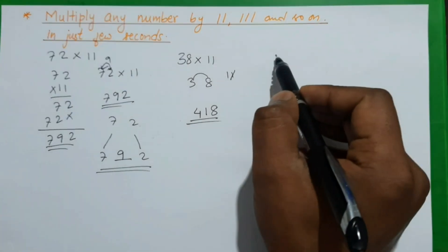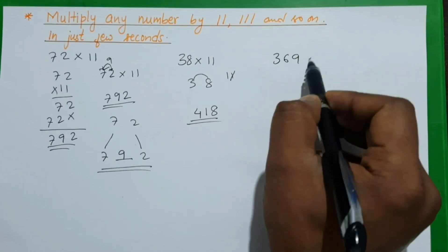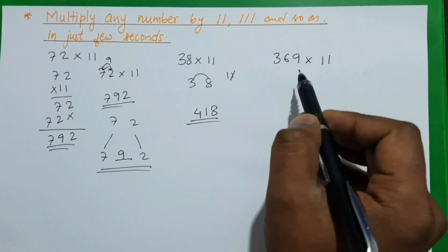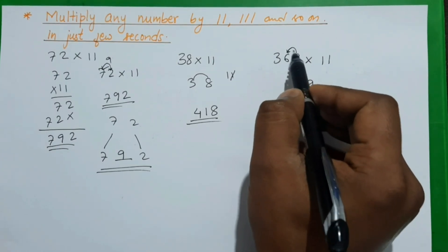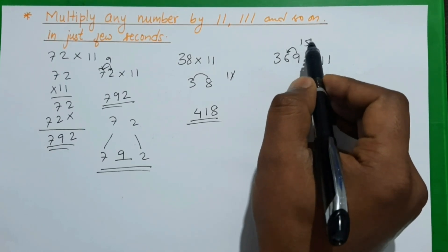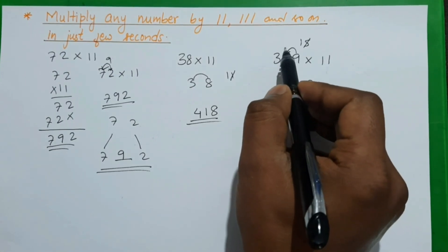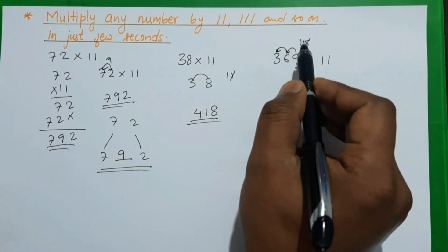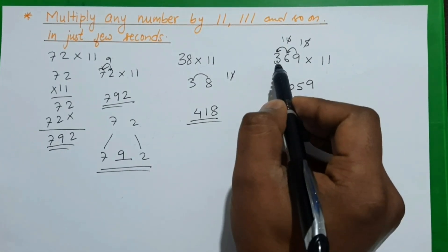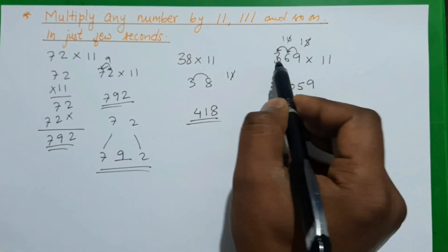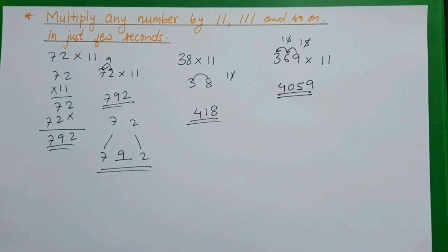Now let's try a three-digit number: 369 × 11. First we write 9. Then 9 plus 6 is 15 — write 5, carry 1. Then 6 plus 3 is 9, plus 1 is 10 — write 0, carry 1. Then 1 plus 3 is 4. So our answer is 4059.